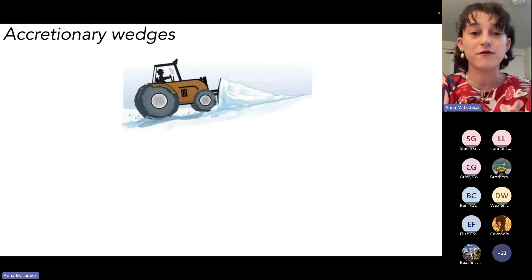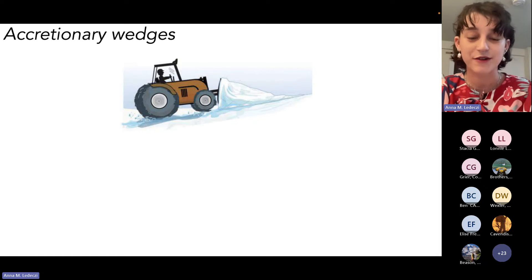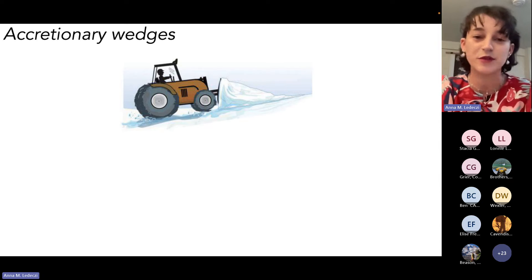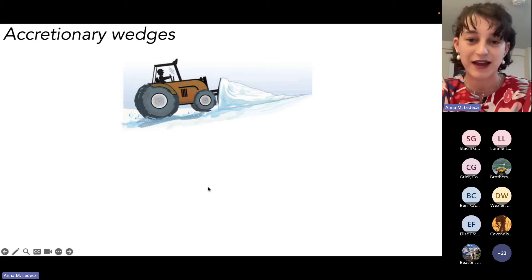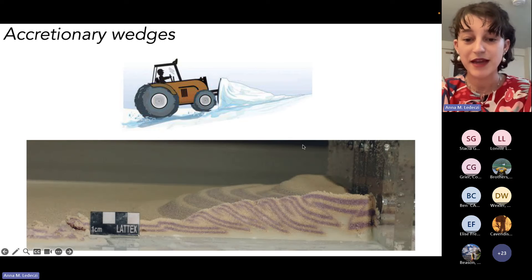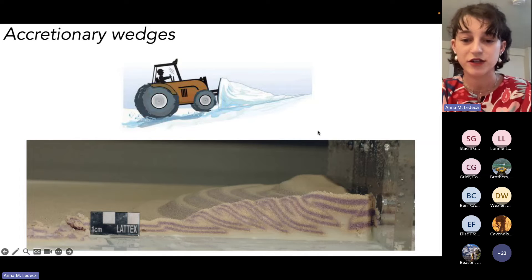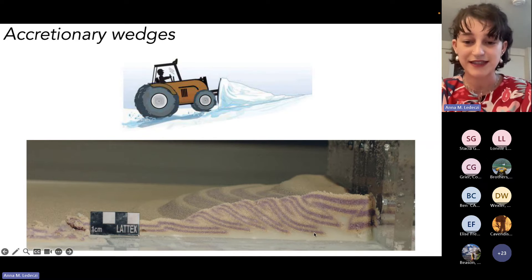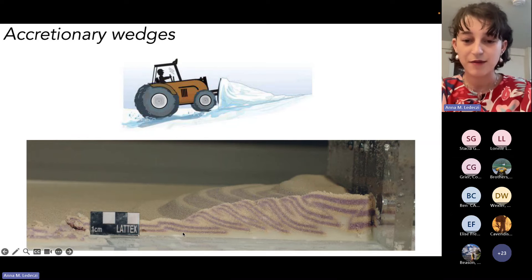Accretionary wedges form at subduction zones where the sediments on top of the downgoing plate get scraped off by the overriding plate. One analogy is a bulldozer pushing a pile of snow. Here I'm showing a sandbox model of the actual internal structure — starting as layered sediments, each layer is faulted up on top of each other, forming a wedge of faults.